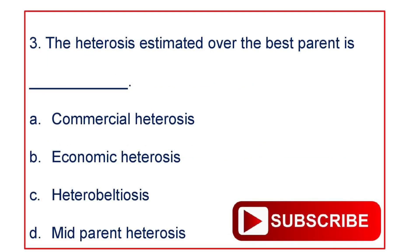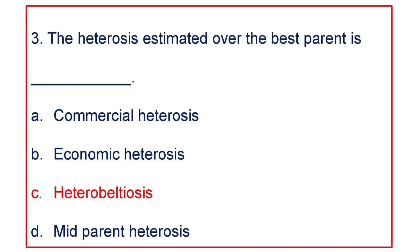Next question: The heterosis estimated over the best parent is: A. commercial heterosis, B. economic heterosis, C. heterobeltiosis, or D. mid-parent heterosis. The answer is heterobeltiosis.